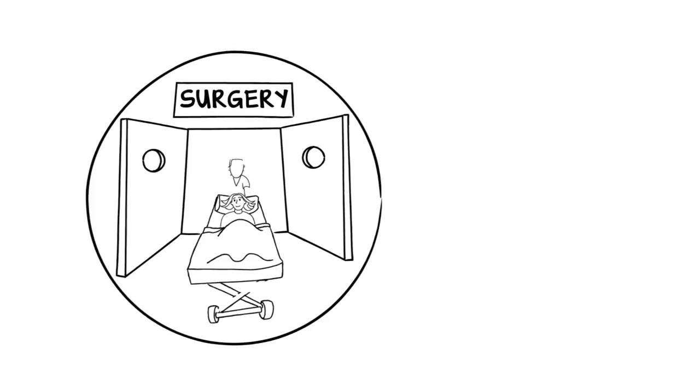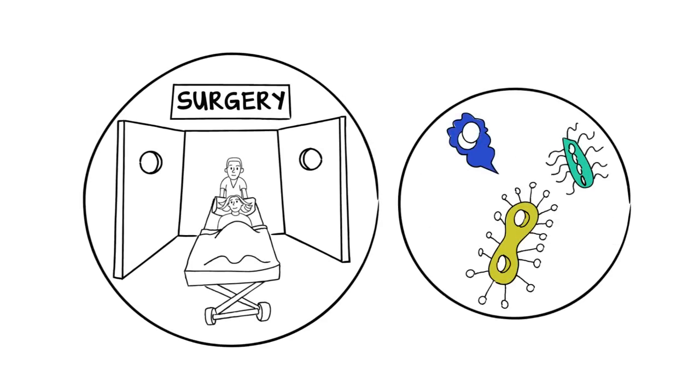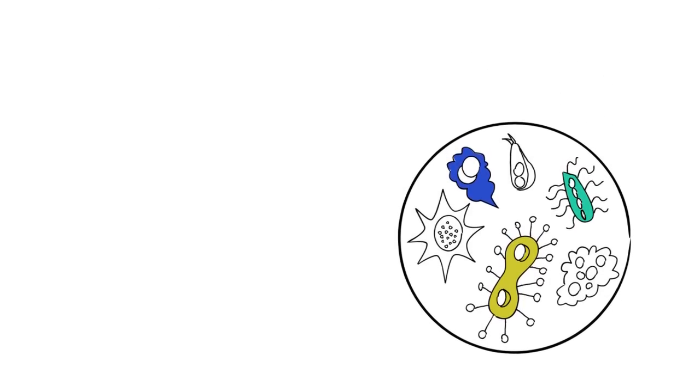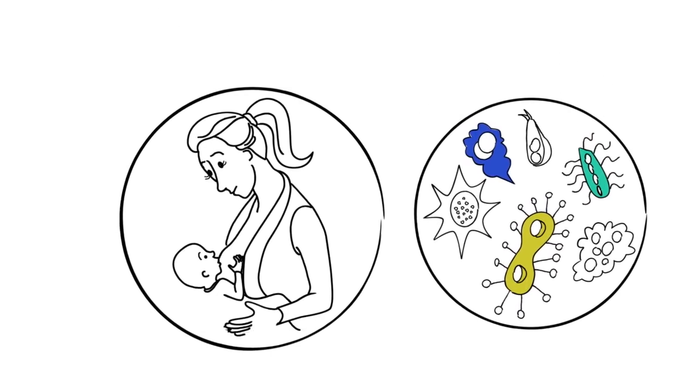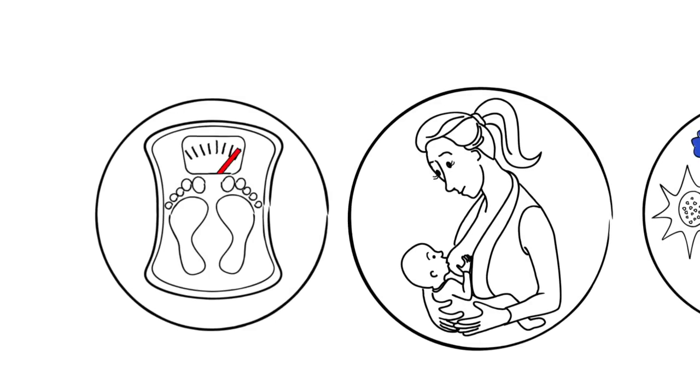Babies born by cesarean section have lower levels of important gut microbes compared to babies born by regular delivery. However, at 12 months, this difference is reduced if babies are breastfed. What's more, breastfed babies have been shown to have a reduced risk of childhood obesity.